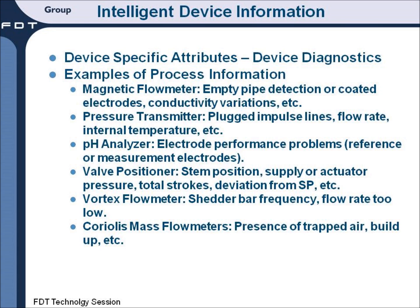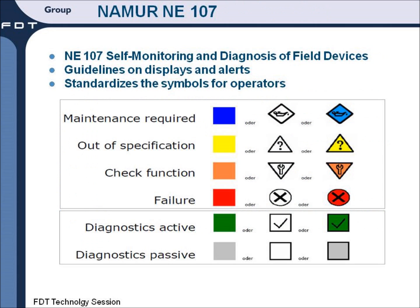The second category of information is device diagnostic information — it's specific to a particular product type. Here's a list of examples of different types of measurement devices you may find in your facility and the kind of information they could give you. In the case of a magnetic flow meter, for example, it may give you an alert or indication that there's empty pipe or that you have coated electrodes. In the case of a pH analyzer, it may give you an indication of a bad reference electrode. Or in the case of a vortex meter, it may indicate that the flow rate is too low to get an actual measurement. In any case, it's all information that can improve your plant reliability and hopefully avoid any kind of unscheduled shutdowns.